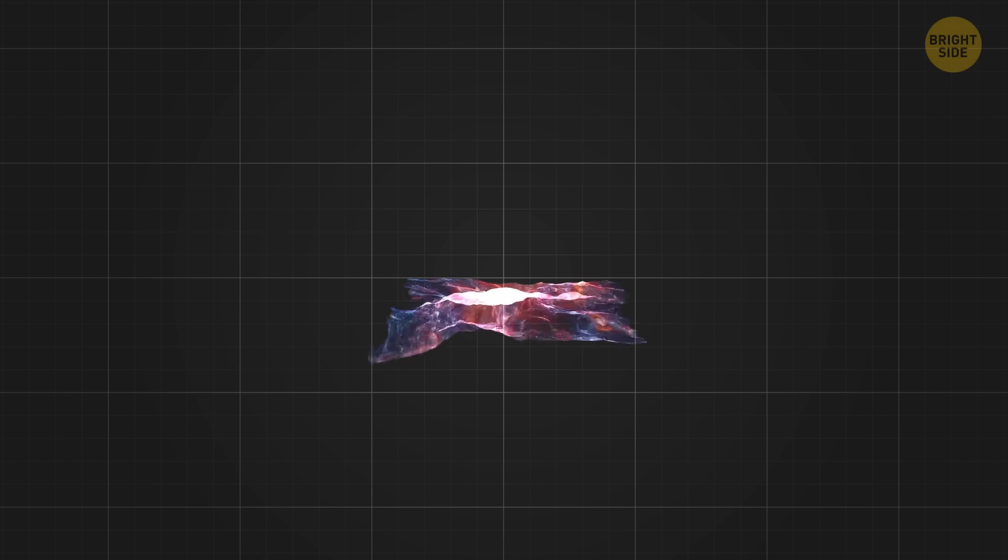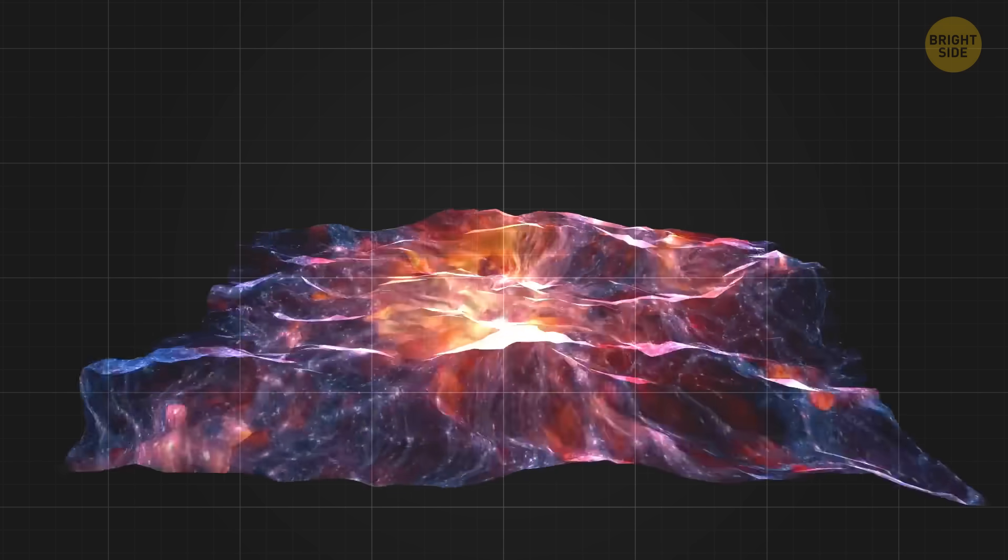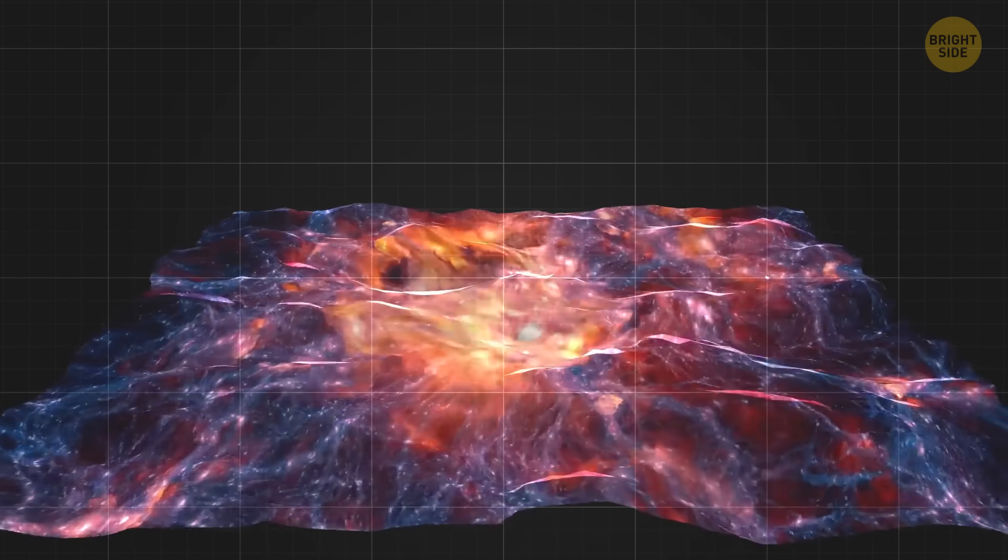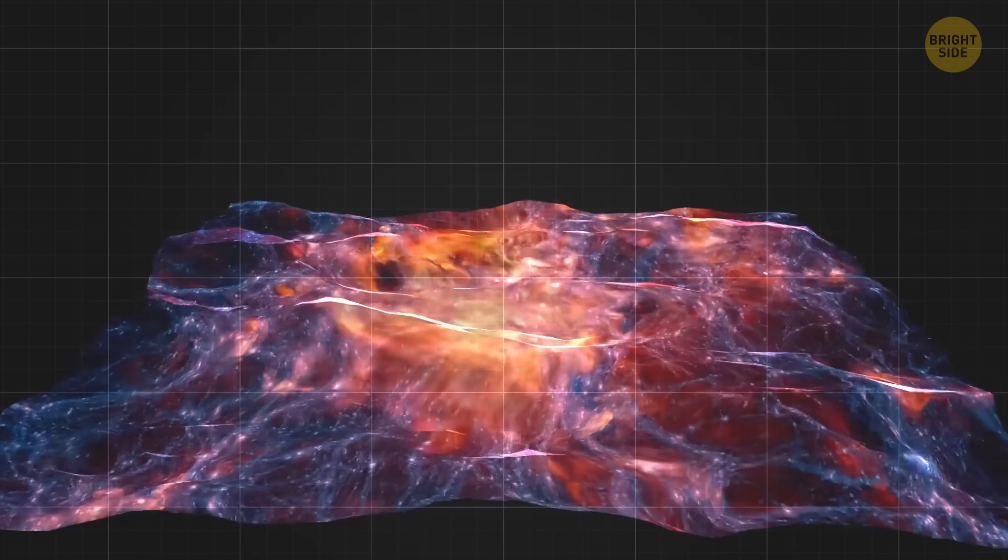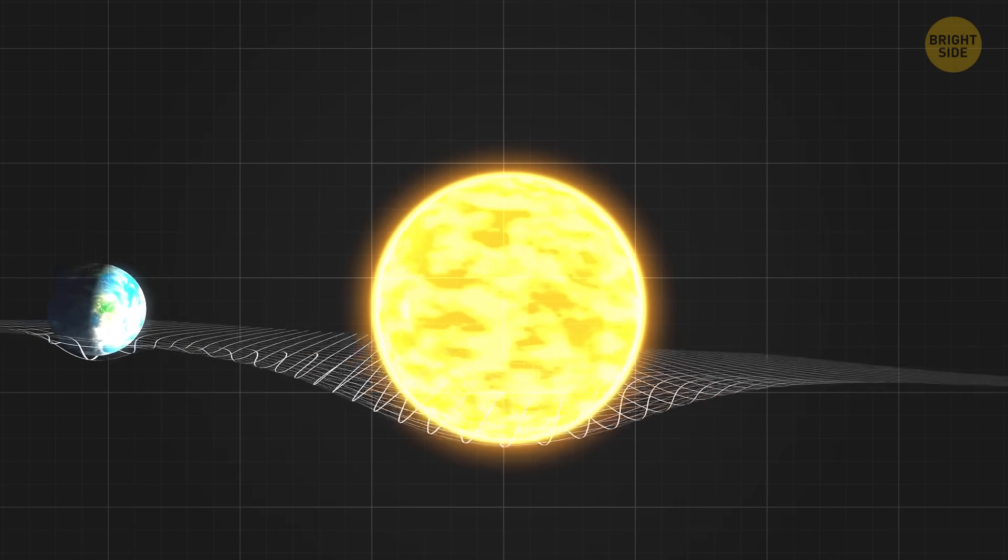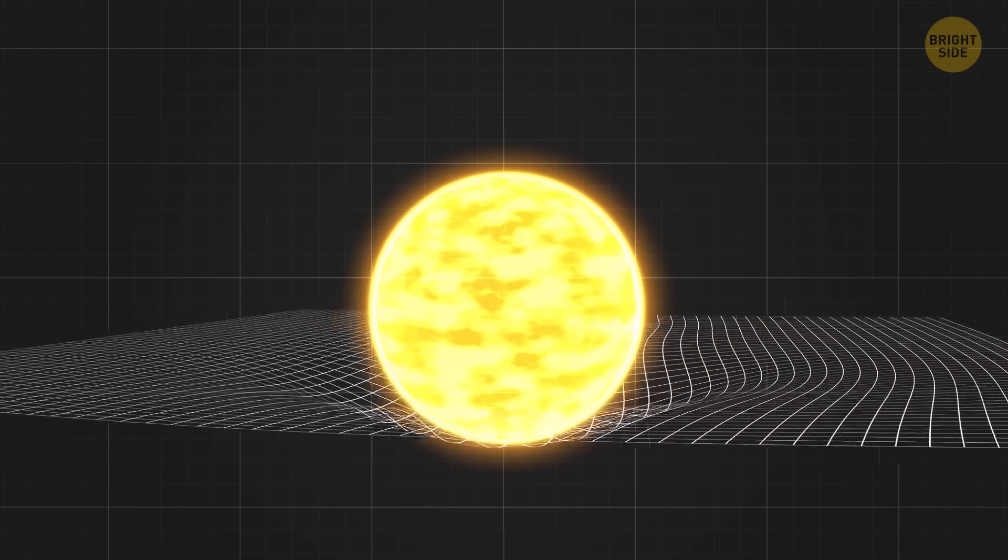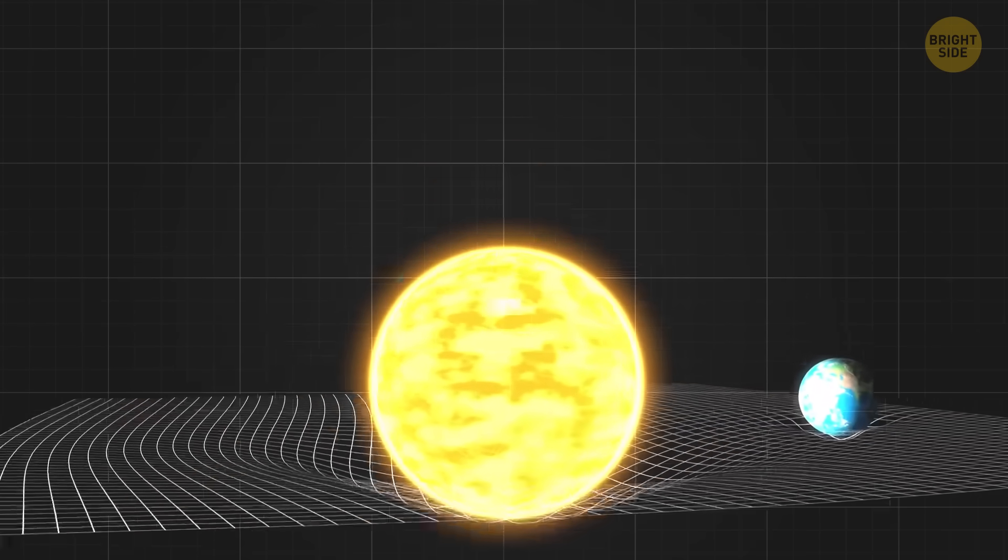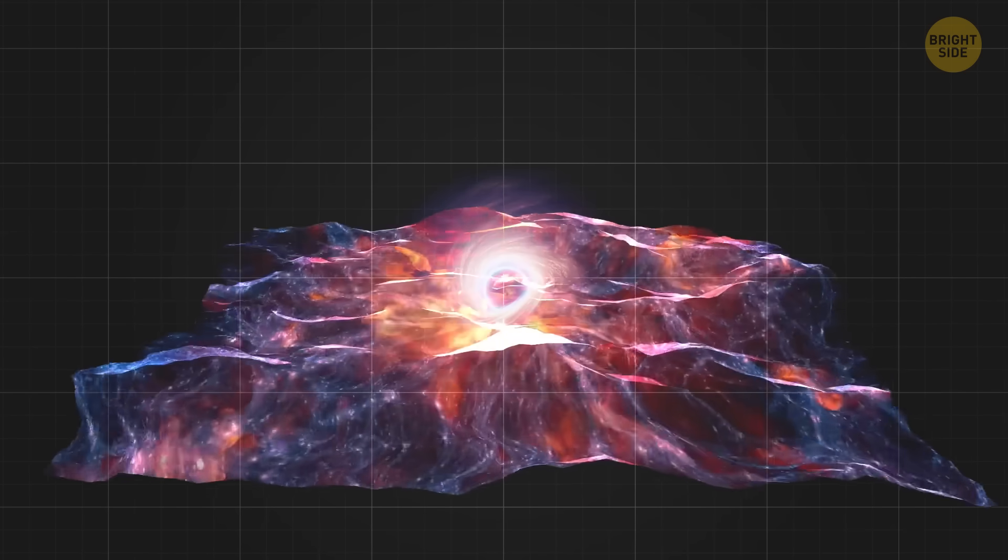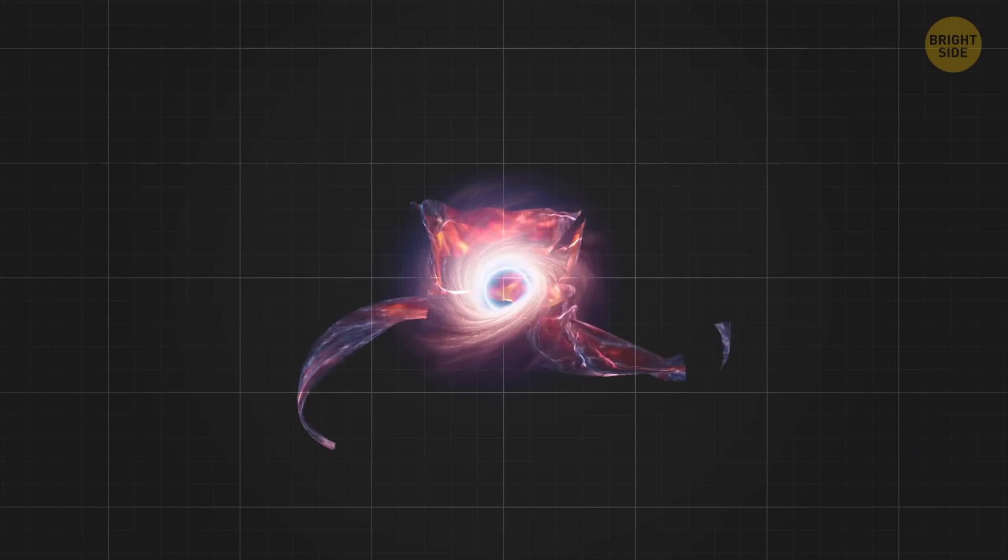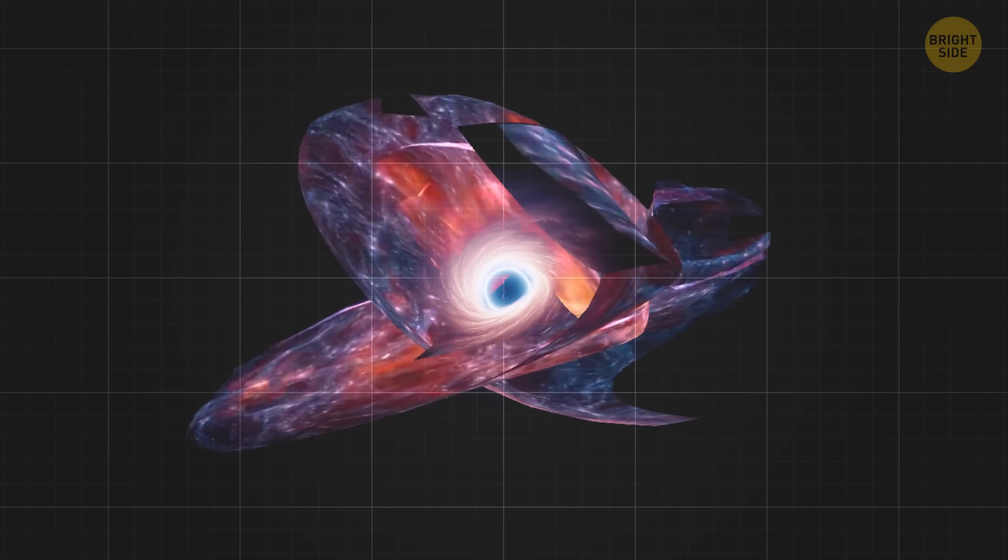We know that spacetime is like a wobbly piece of cloth which can curve and bend when we place heavy objects on it. In some situations, like near-massive objects such as stars or black holes, spacetime can be curved. Now, imagine an object that's so heavy, with gravity curving the spacetime so strongly that it literally loops on itself.